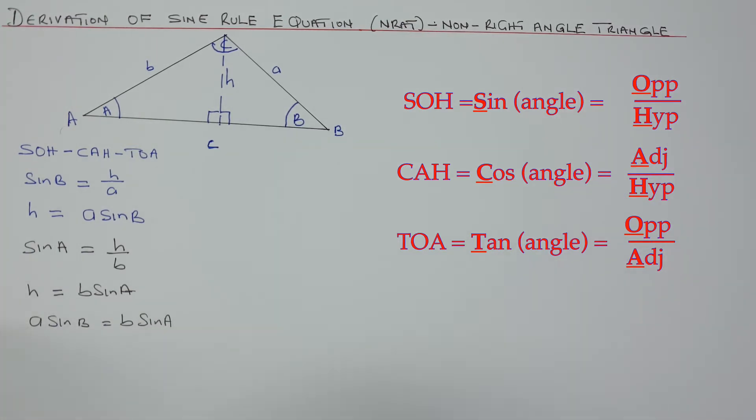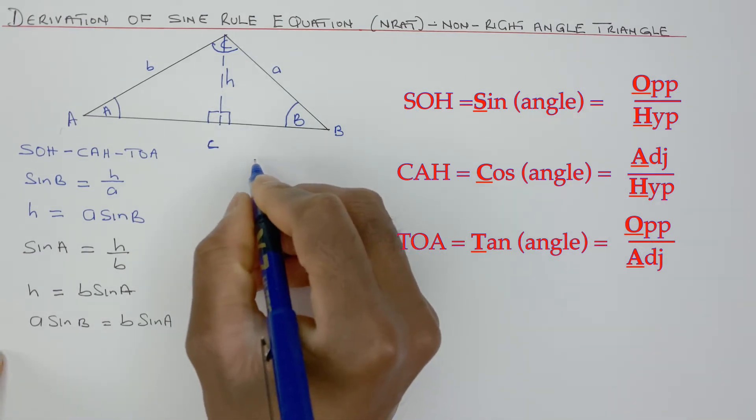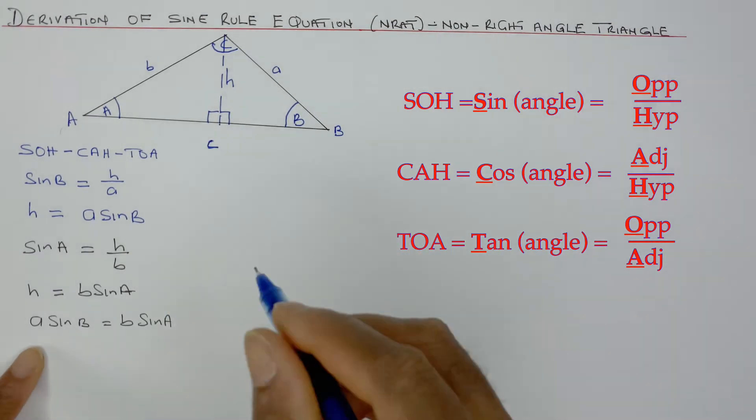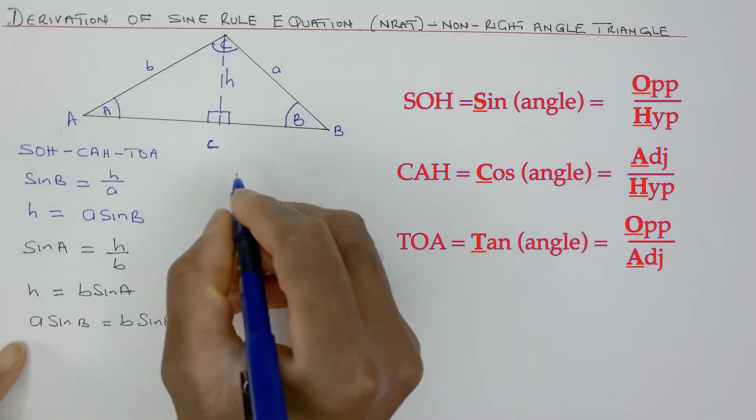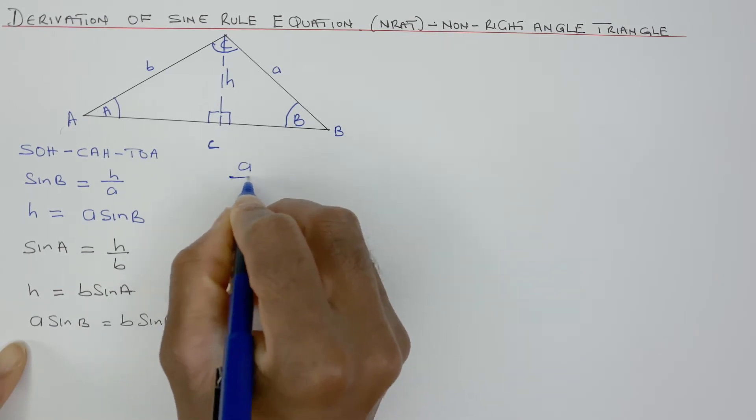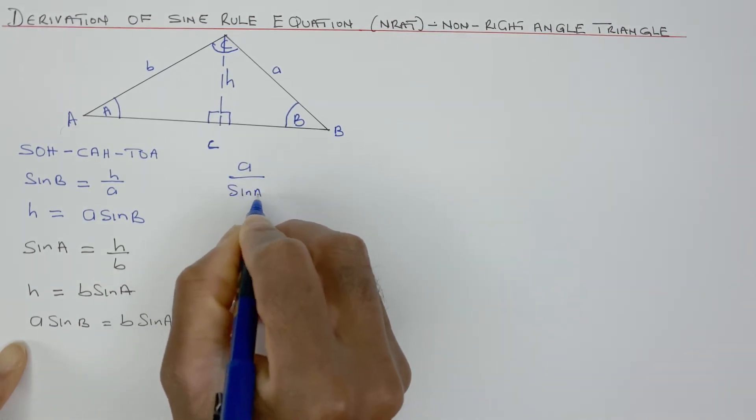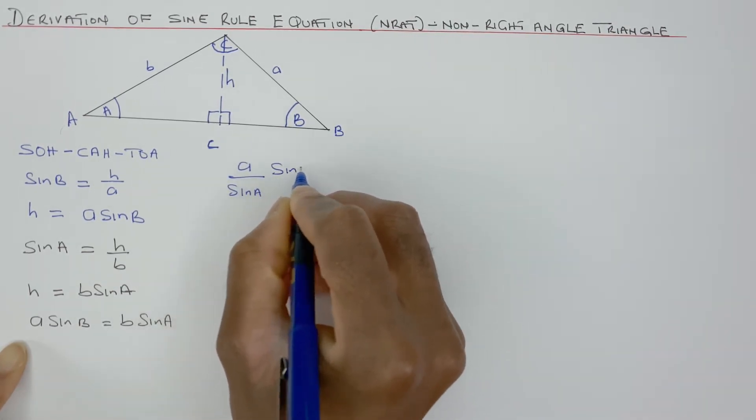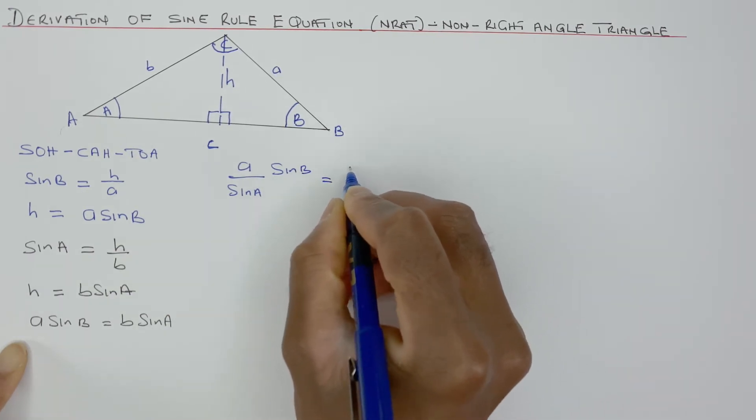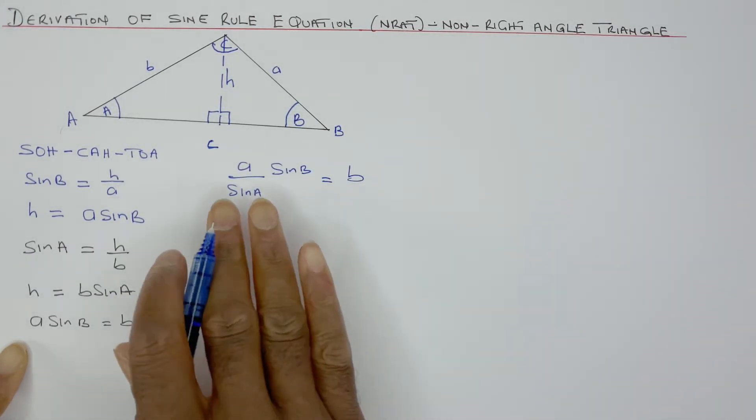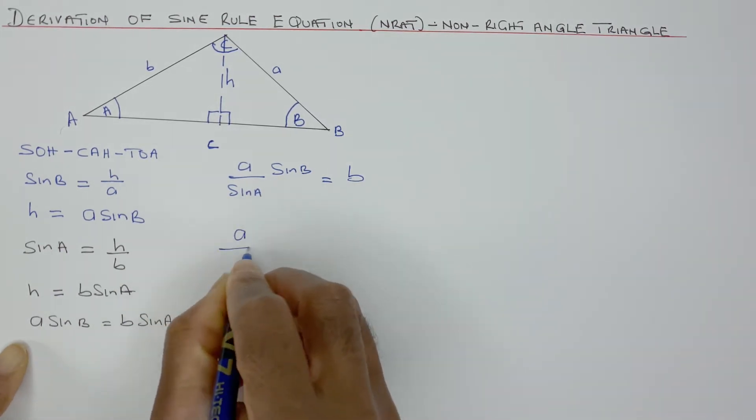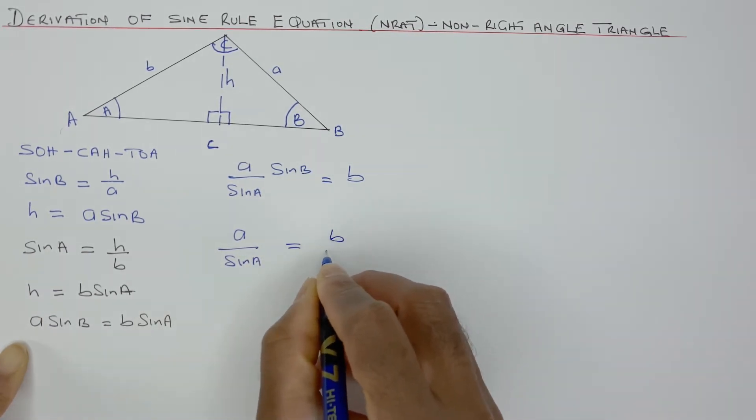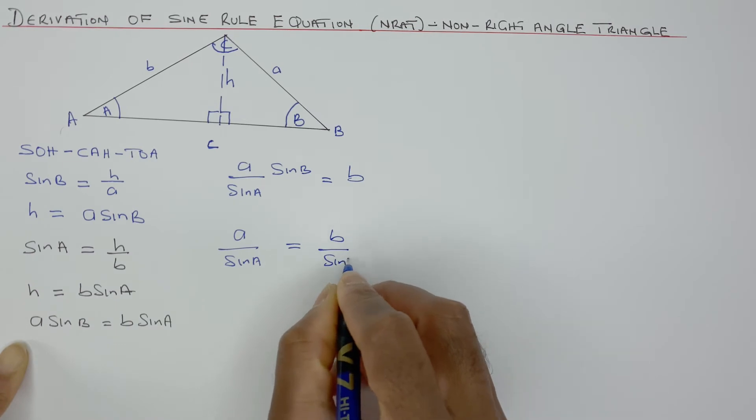What I can do now is write it here. This is a ratio now. So I can then say, if I divide both sides by sine of A, I get A over sine of A equals B. Now, if I then divide both sides by sine of B, I then get A over sine A equals B over sine of B.